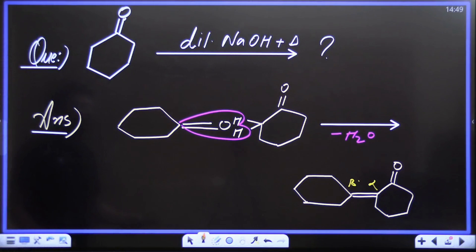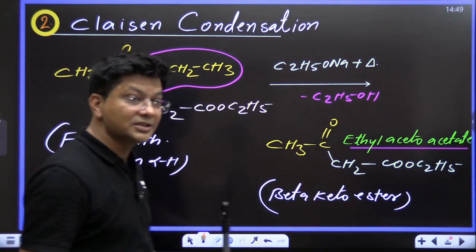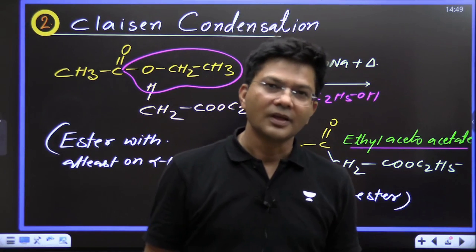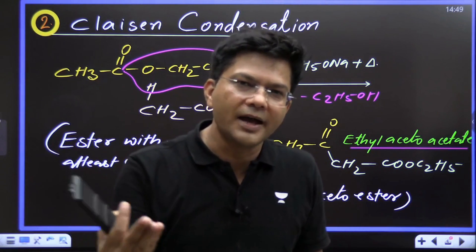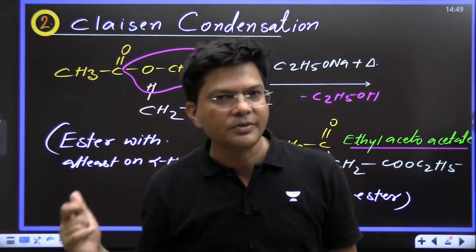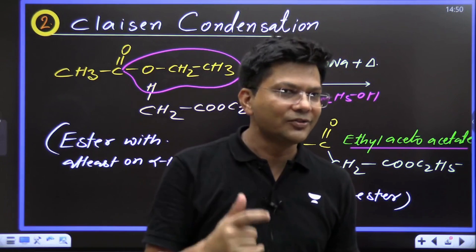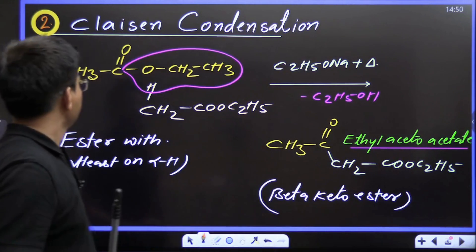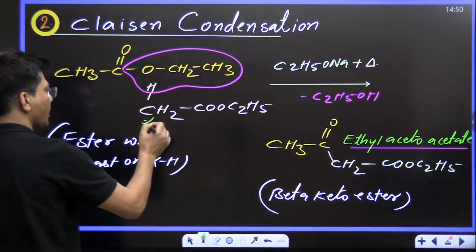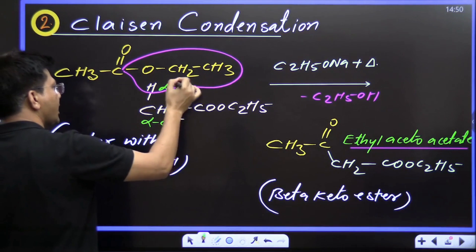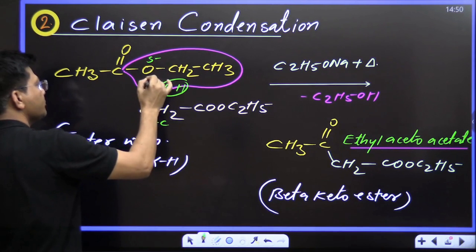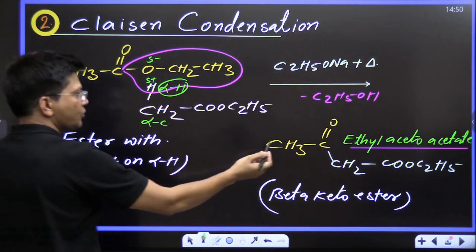After aldol condensation, here is Claisen condensation. This Claisen condensation is not given in your NCERT, but your examiner will definitely ask this question — it is a favorite question whether in NEET or JEE. In aldol condensation we removed water; now in this reaction we remove alcohol. This is your acidic alpha hydrogen atom, adjacent to the carbonyl functional group. This proton goes along with the oxygen (which is negative). So ethyl alcohol is removed and you get a beta-keto ester.